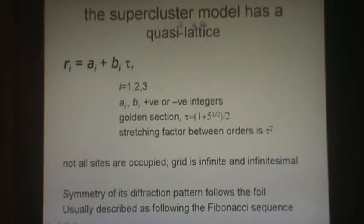The super-cluster model has a sharp diffraction pattern, so it has a quasi-lattice, a_i plus b_i times tau. i are the three spatial dimensions, not six. a and b are positive or negative integers. The golden section tau equals 1 plus root 5 all over 2. It has a value of 1.618. The stretching factor between orders is tau squared.